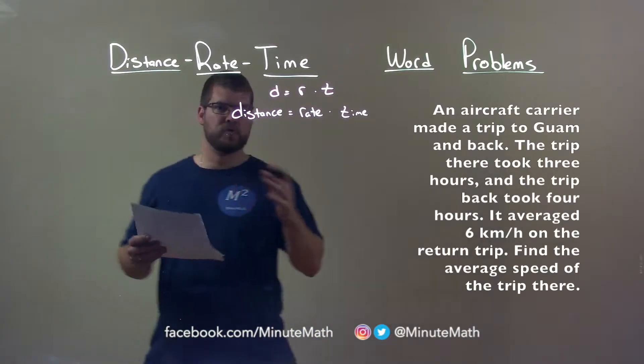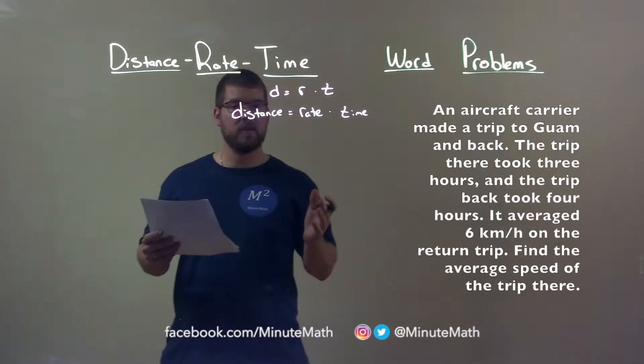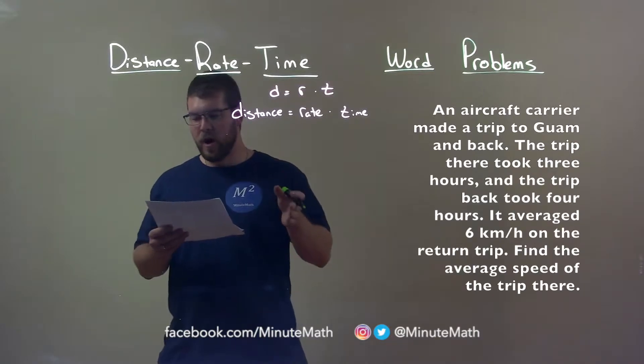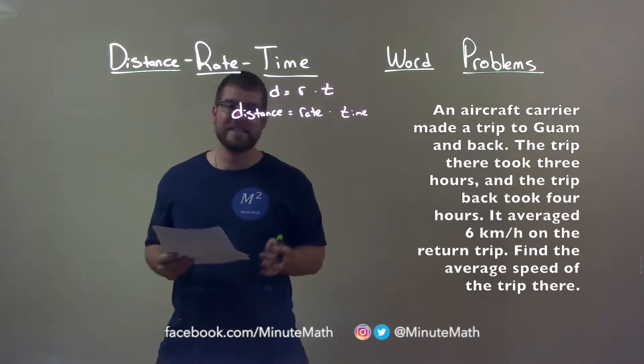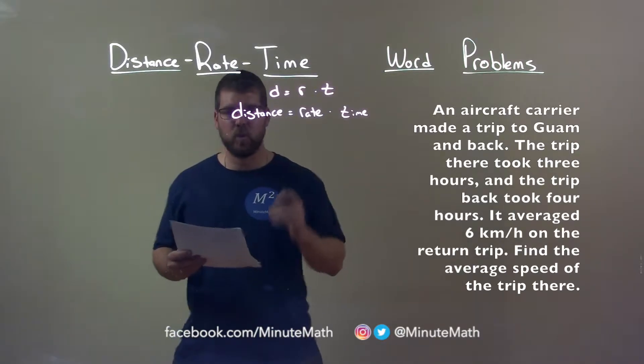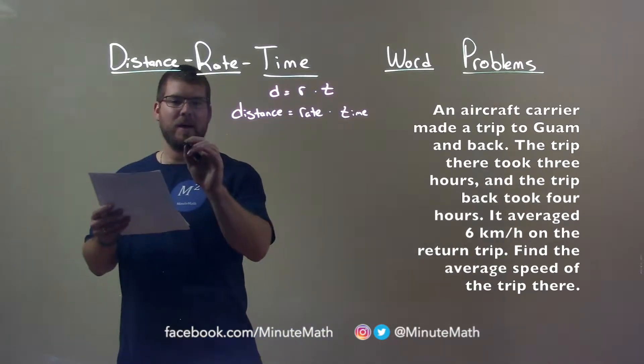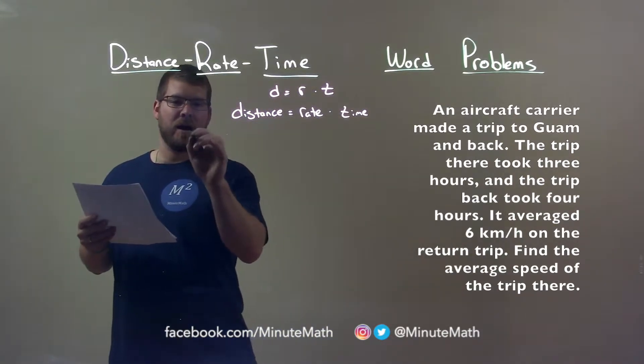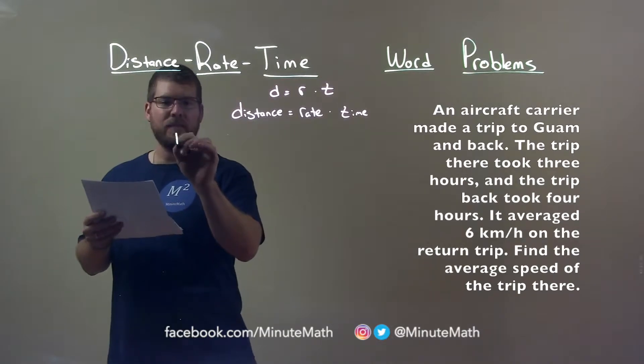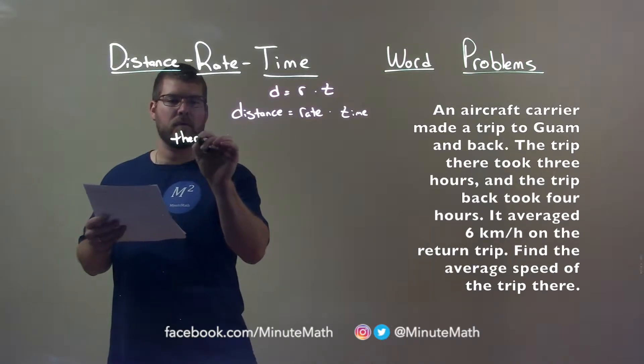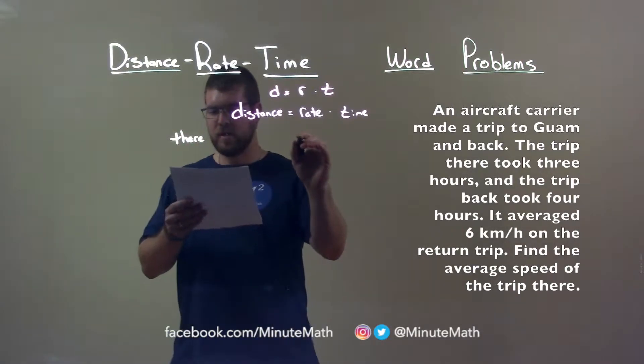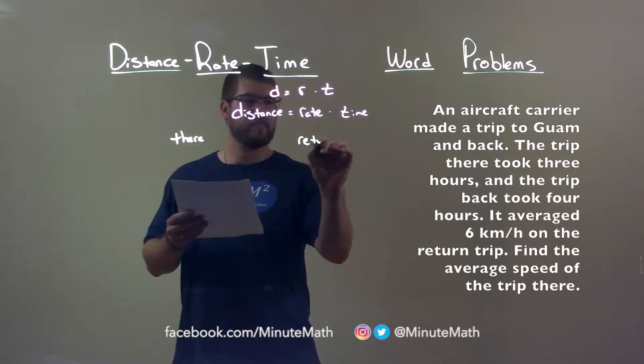So we have two trips in a sense. The distance is going to be the same, right? The distance to Guam and back—the distance to Guam is the same as the distance back. So we have going there and then return, going back.